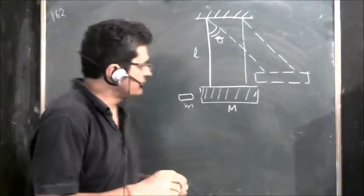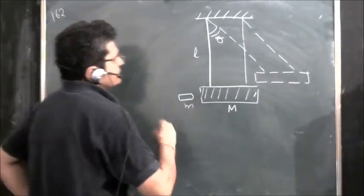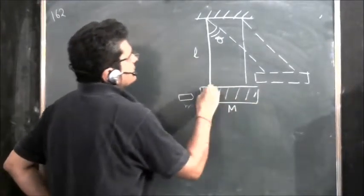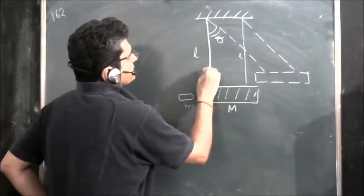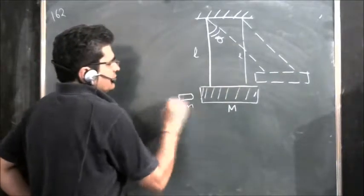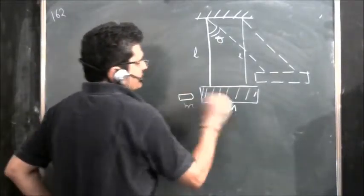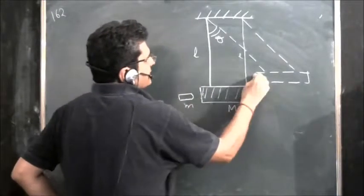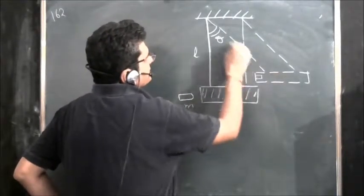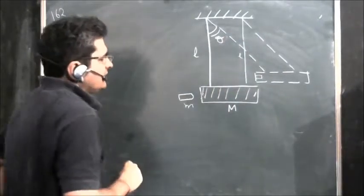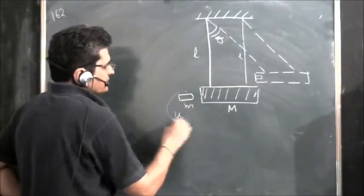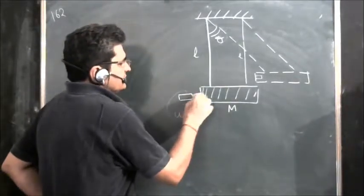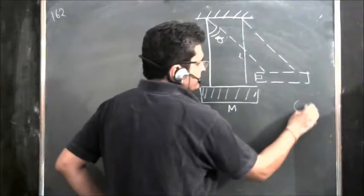We will solve riddle problem 162. In this problem there is a weight M connected by two identical strings of length L. A bullet strikes this mass, gets embedded, and the combined system swings to an angle theta. We have to find out what was the velocity of the bullet.